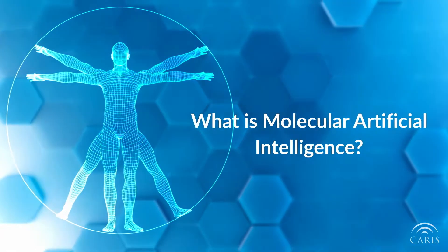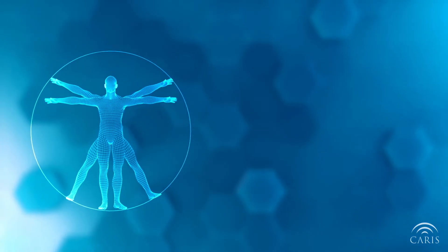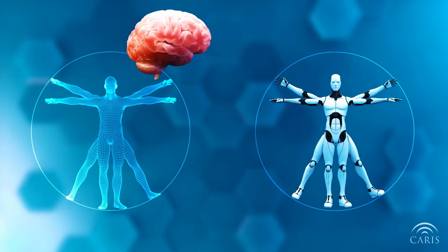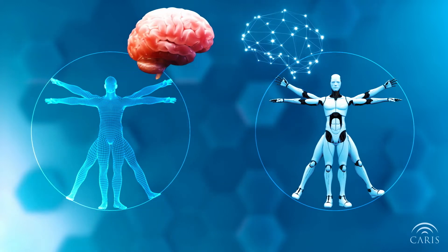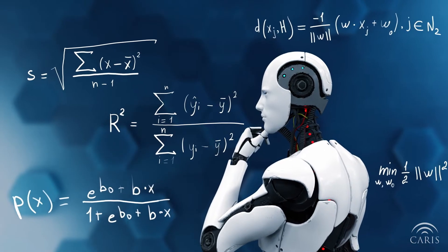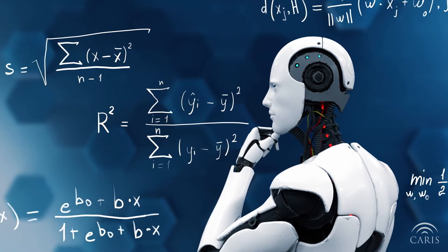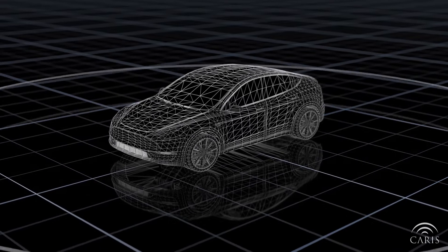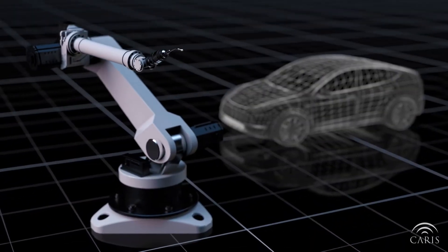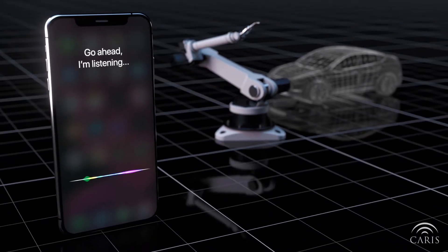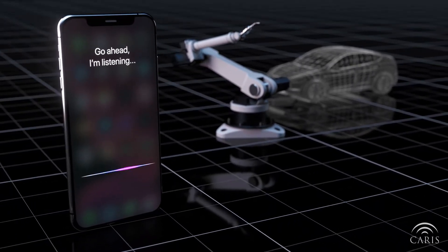What is Molecular Artificial Intelligence? Artificial intelligence, or AI, refers to the ability of computers to imitate human thought and problem solving to execute tasks. Through AI, a computer system uses math and logic to simulate the reasoning that people use to take in information and make decisions. From self-driving cars to robots that manufacture goods and digital personal assistants who can answer questions, artificial intelligence has infiltrated our lives.